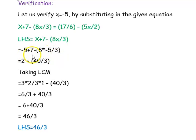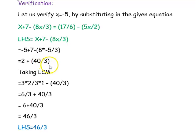Minus 5 plus 7 gives plus 2. The two negatives become positive, so 8 times 5 is 40 divided by 3.